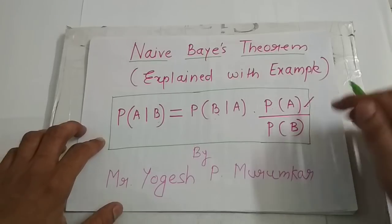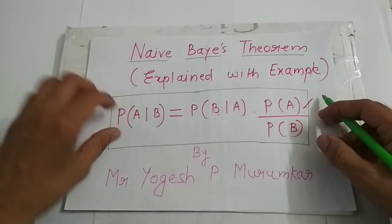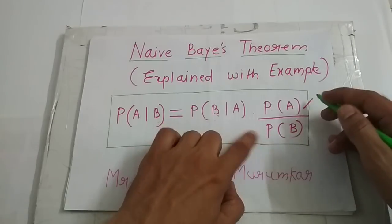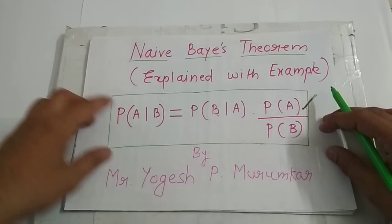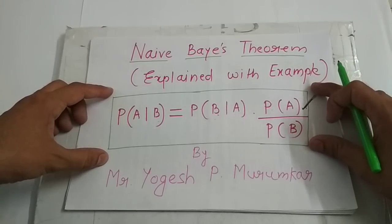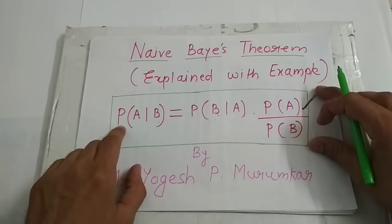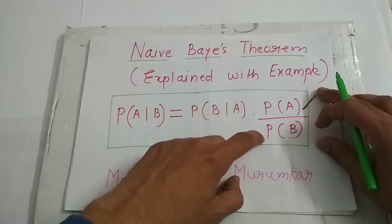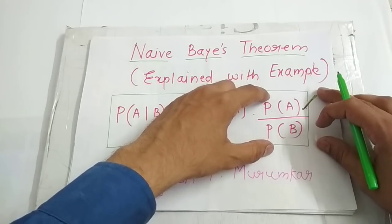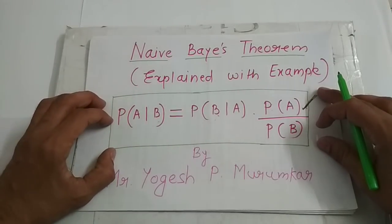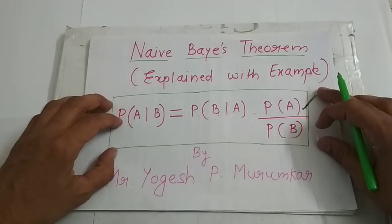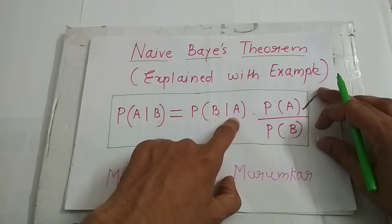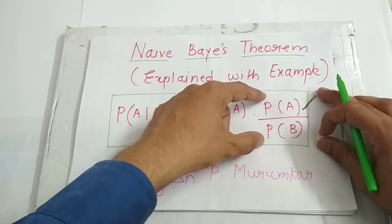Naive Bayes theorem is basically based on the Bayes equation. The equation which you are able to see here: probability of A given B is equal to probability of B given A, into probability of A, divided by probability of B. This particular equation is called the Bayes equation. Some people may read it as: probability A after B equals probability B after A into probability of A divided by probability of B — this is the ratio of probabilities of A and B. You may also read it as: probability A such that B is true, equals probability B such that A is true, into the ratio of probabilities of A and B.